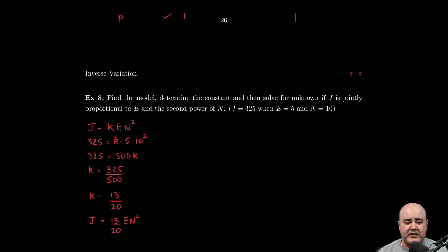So here once we write down our equation, we plug in the numbers that we're given. We're given that j is equal to 325, we're given that e is 5, and finally that n is 10, so we replace that with 10 squared.